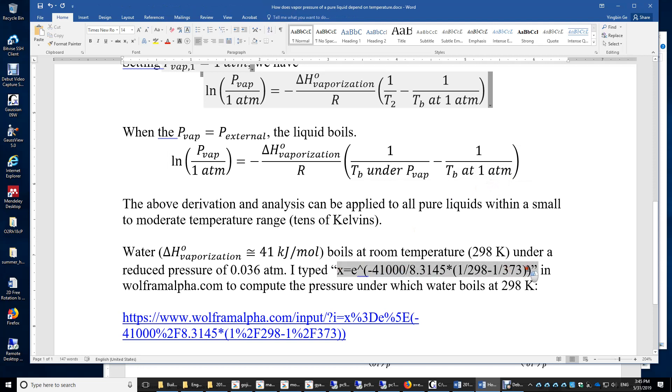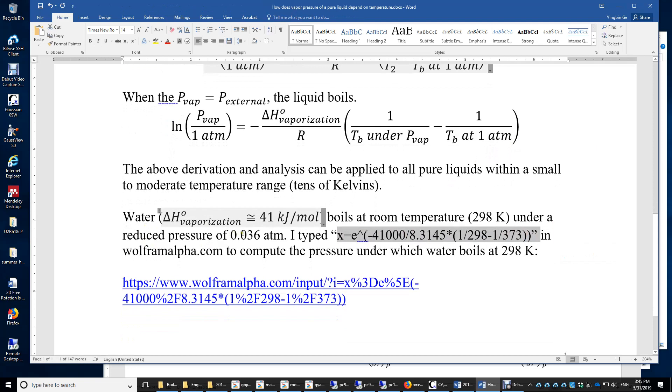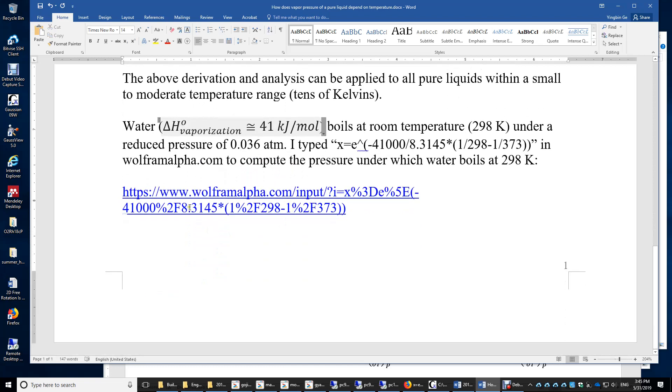So I typed this equation in WolframAlpha and got the result 0.036 atm. Water boils at room temperature if the external pressure is as low as 0.036 atm. You may click this URL to see the calculation.